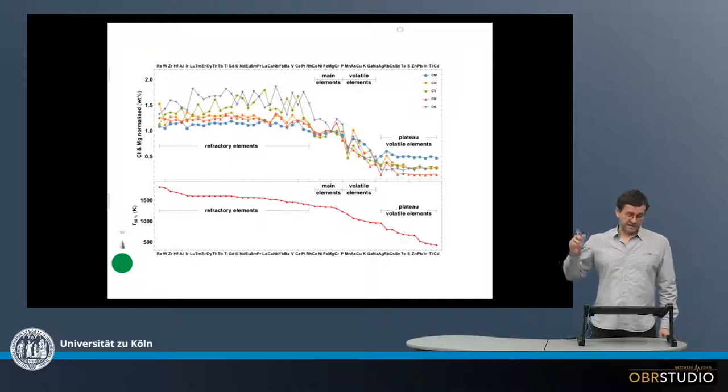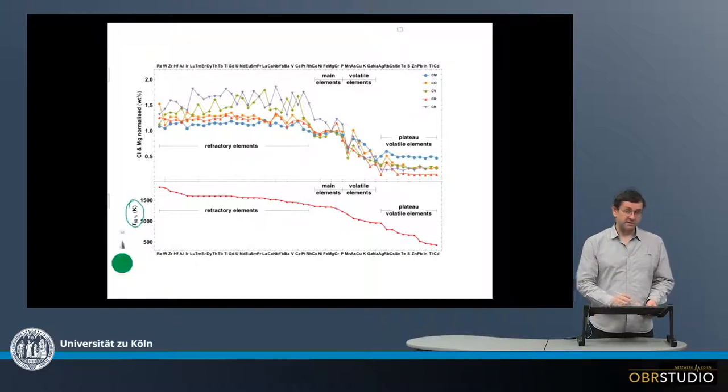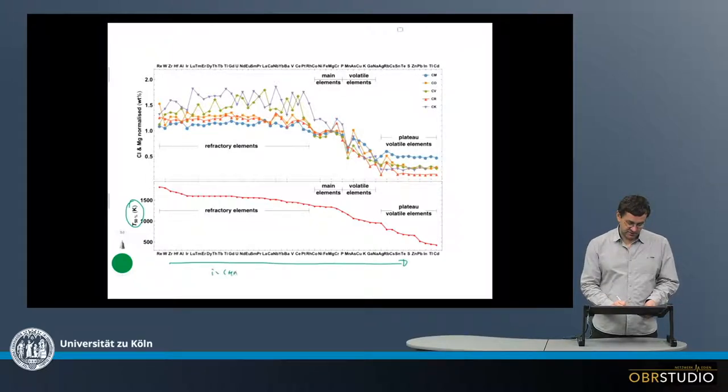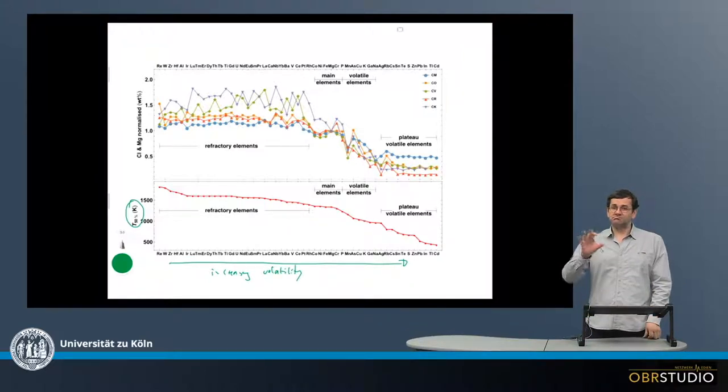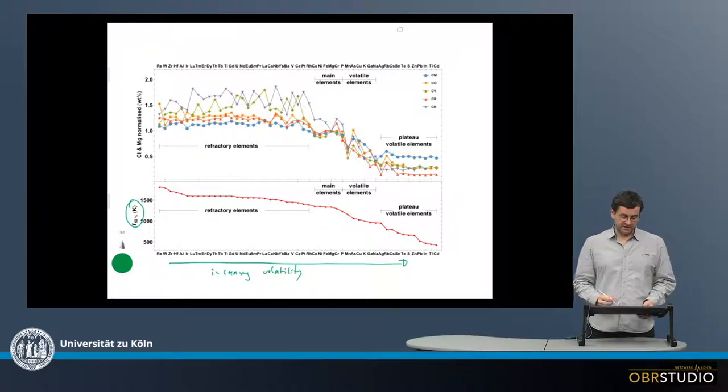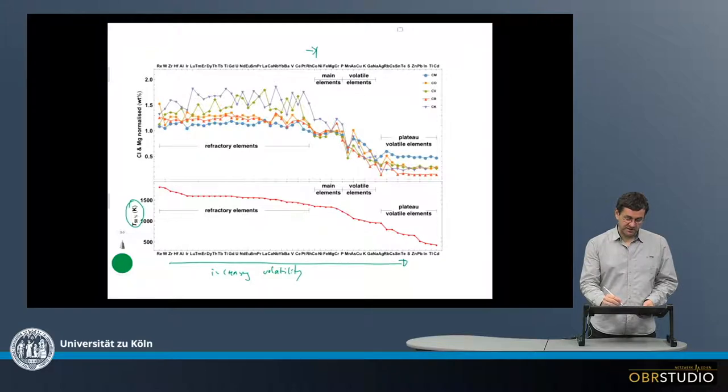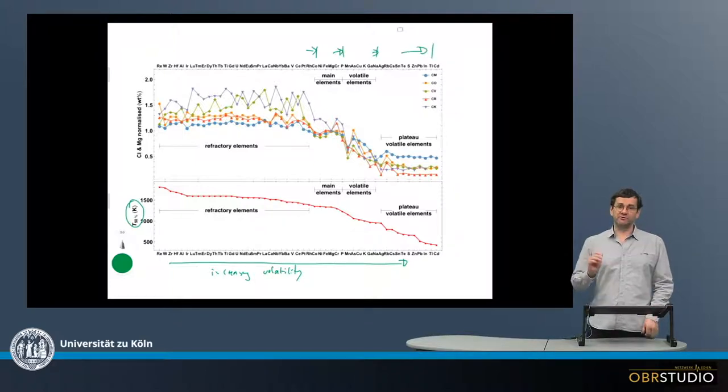In the lower plot, on the y-axis, is the 50% condensation temperature. And we can see that to the right there is an increase of volatility. Also shown are the cosmochemical groups into which the various elements are categorized. So for example, up to here are the refractory elements. Then up to here are the main elements. Then the volatile elements. And then here, these are the highly volatile elements.